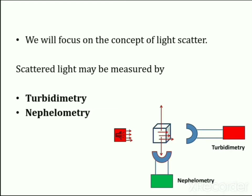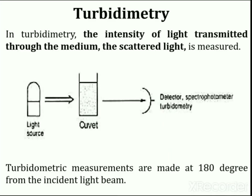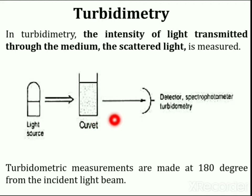Scattered light can be measured by either turbidometry or nephelometry. In turbidometry, the measurement of light transmitted through the medium — also known as scattered light — forms the basis of turbidometric analysis. These measurements are made at 180 degrees from the incident light beam. As shown in the picture, the light source, sample cell, and detectors are arranged parallel to each other.